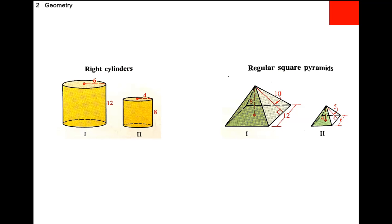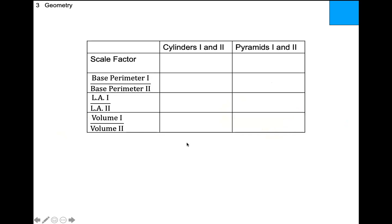This is a crummy proof — I'll claim these are similar shapes since they're the same shape but different size. I'll label one as the larger and two as the smaller. We're going to fill out a table with: scale factor, ratio of base perimeters, ratio of lateral areas, and ratio of volumes. To find the scale factor you pick two corresponding sides — I'll go big to small.